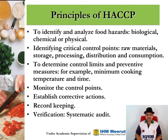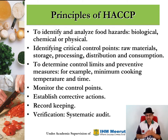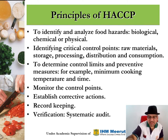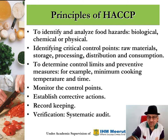These are the seven principles of HACCP: identify and analyze food hazards, identify critical control points, determine critical limits and establish them, monitor the critical control points, establish corrective actions, keep records at all critical control points, and finally conduct an audit — verification. These are the seven principles of HACCP that one has to follow for the general safety of food.